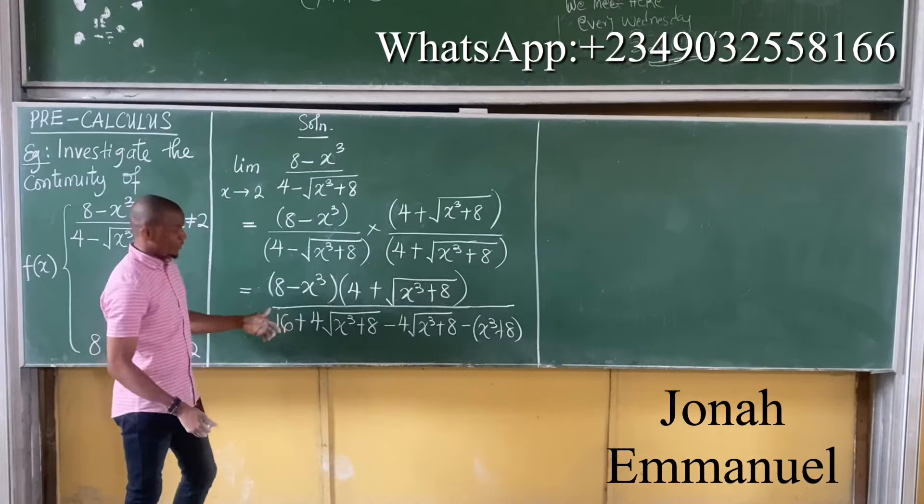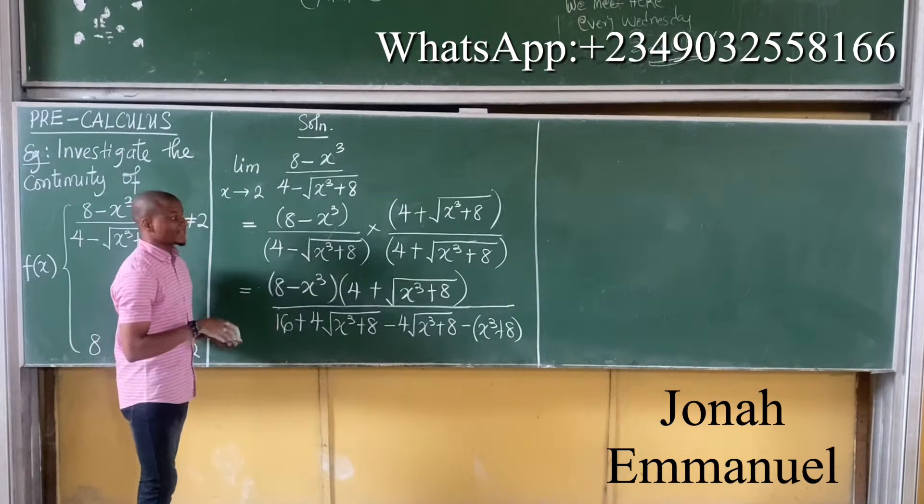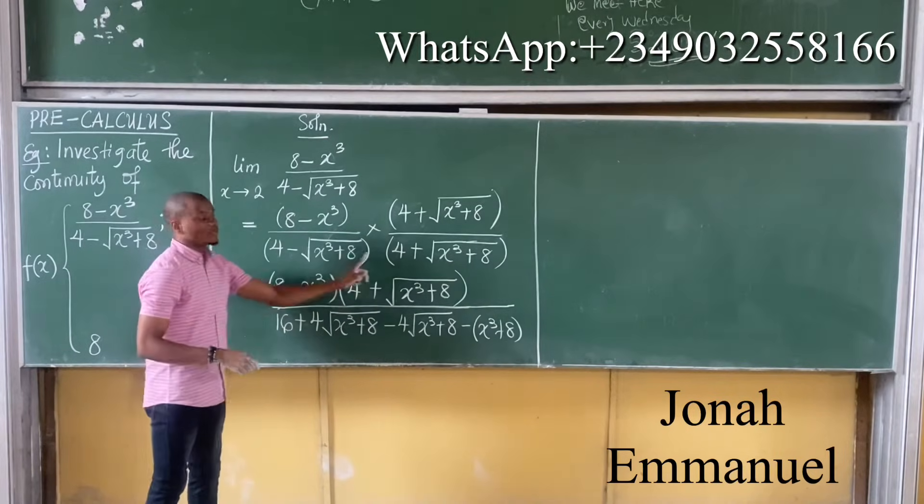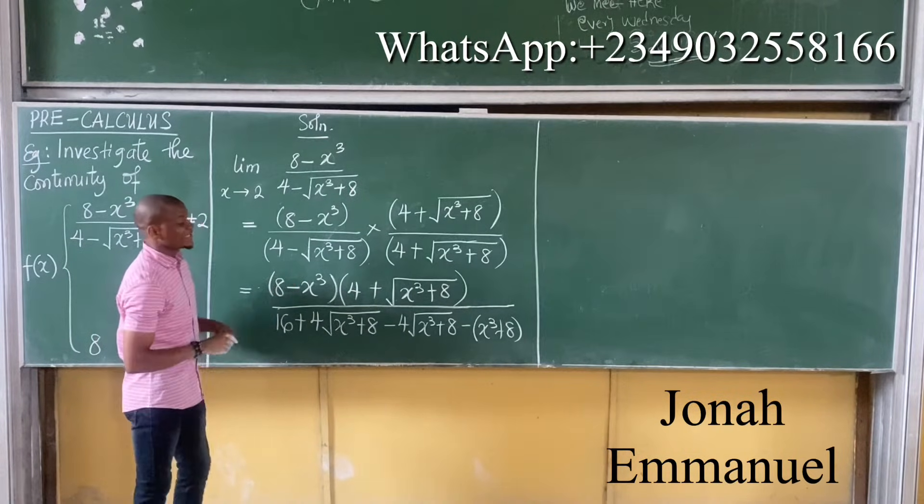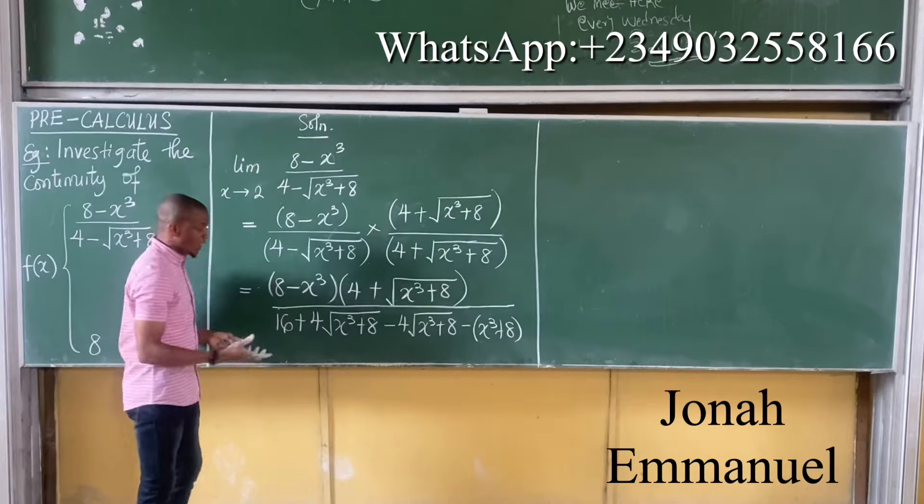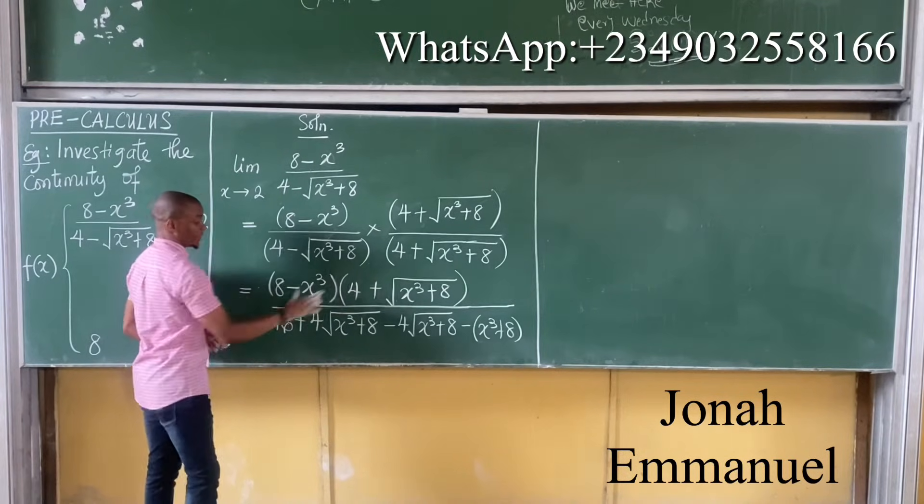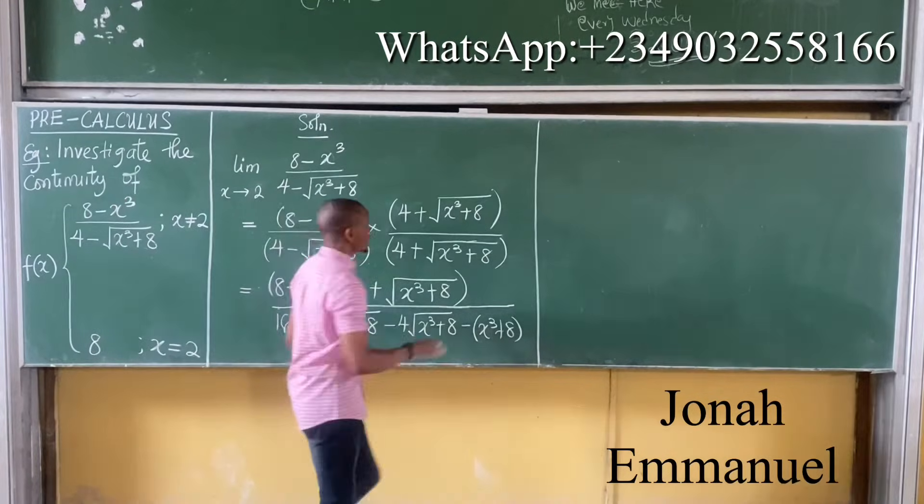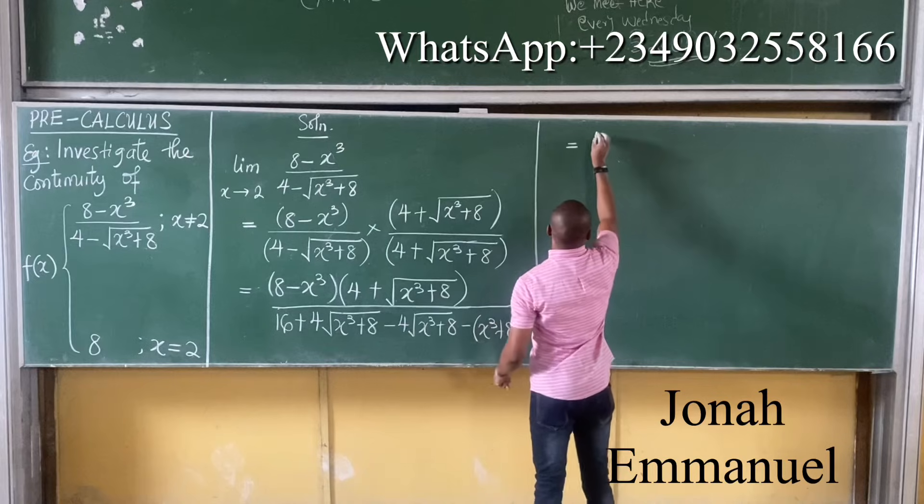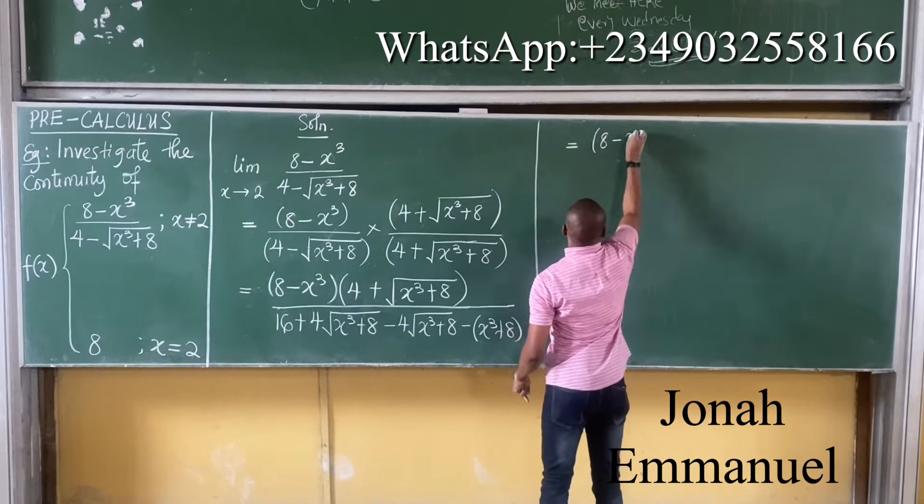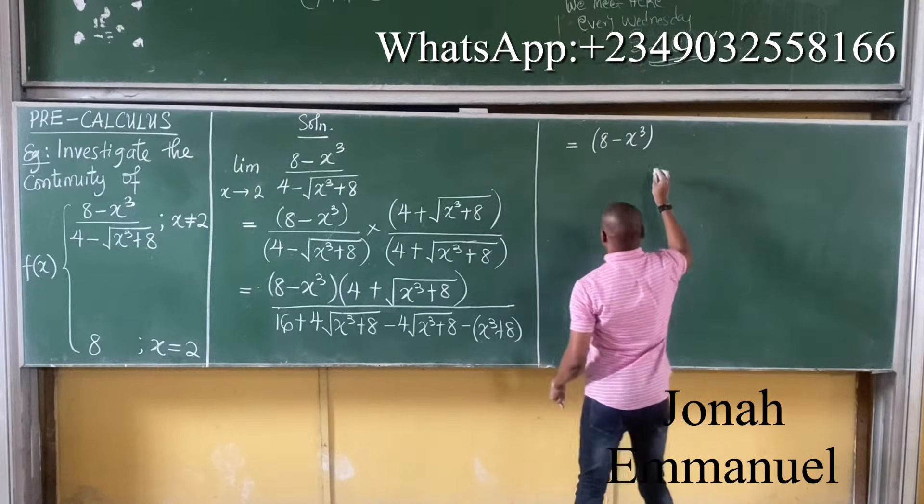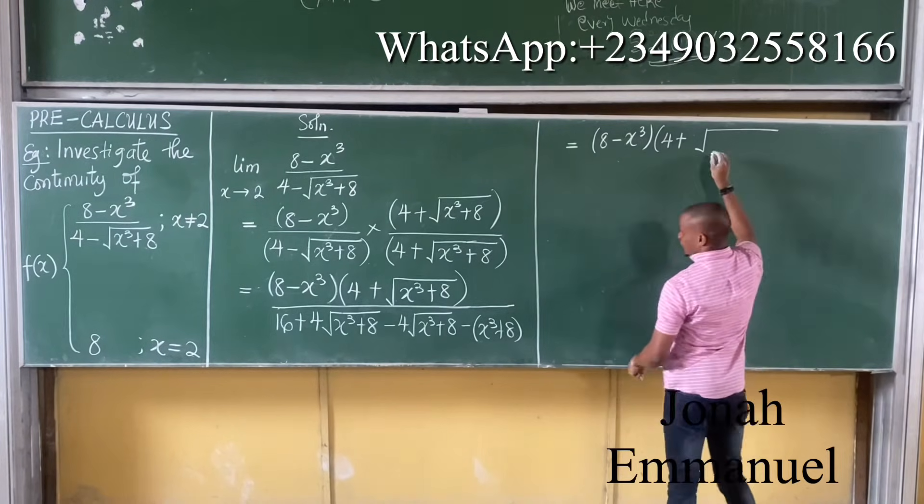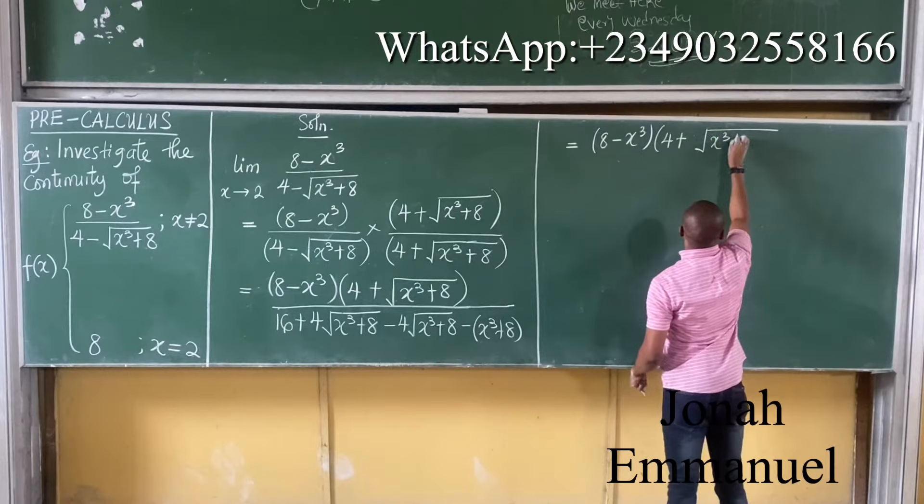So in our previous class, what we discussed, we said the concept is this: do not expand numerator, simply expand only denominator, because we are expecting that after expansion we'll have a term that will cancel one of the terms in the numerator. So hence, from this, we'll have this as being equal to 8 minus x cubed into 4 plus the square root of x cubed plus 8, all over: